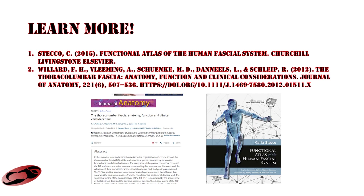If you want to learn more about the thoracolumbar fascia, I recommend the Functional Atlas of the Human Fascial System — a book I've recommended in all the other videos — which has a complete breakdown of the thoracolumbar fascia with dissections from human cadavers. Another free source is the article Thoracolumbar Fascia: Anatomy, Function and Clinical Considerations from the Journal of Anatomy, which also has images and a detailed breakdown of all the connections and layers within it.